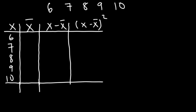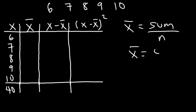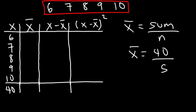We're going to take the sum of the first column to help us calculate the mean. The mean is the sum of the data values divided by n. If we add 6, 7, 8, 9, and 10, that gives us 40. The mean is going to be 40 divided by n. Looking at our list, we have five numbers, so n is 5. 40 divided by 5 is 8, so the mean is 8, which we'll put in the second column.